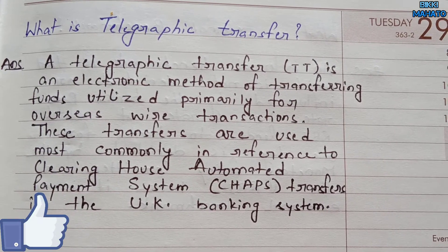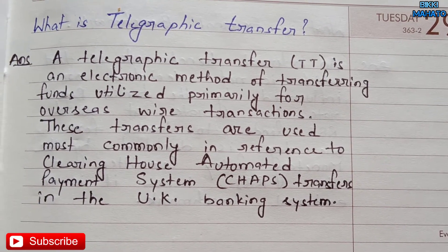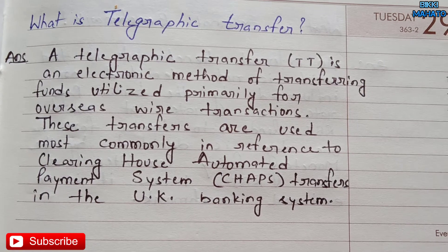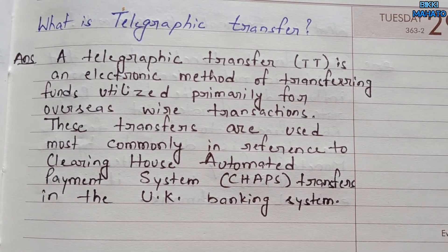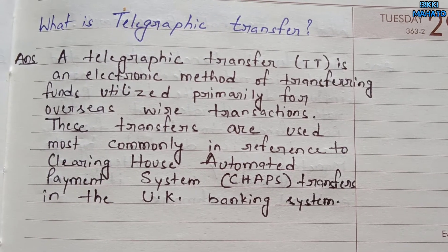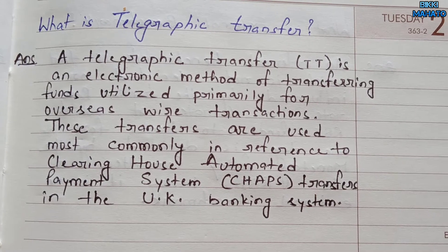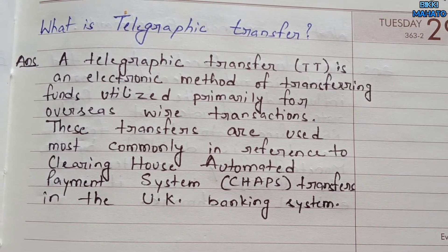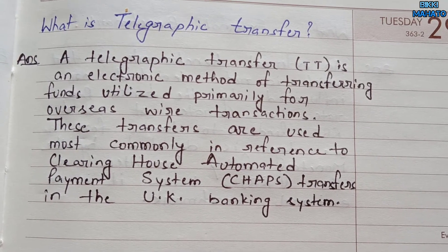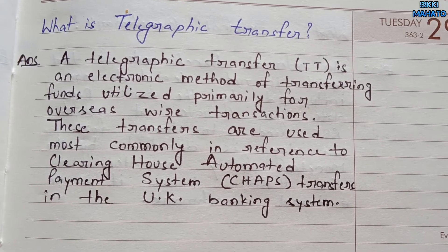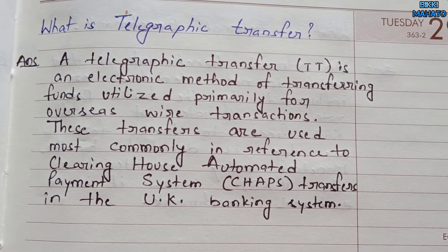Today's topic is telegraphic transfer. A telegraphic transfer, or TT, is an electronic method of transferring funds, utilized primarily for overseas wire transactions. These transfers are used most commonly in reference to the Clearinghouse Automated Payment System, CHAPS.